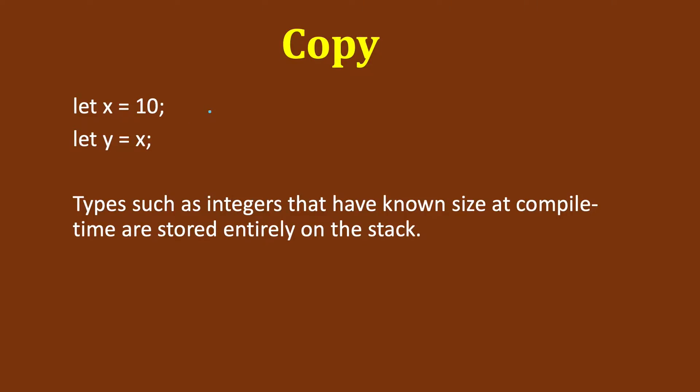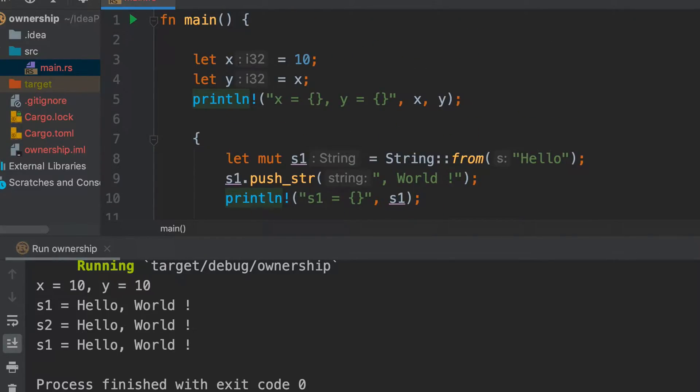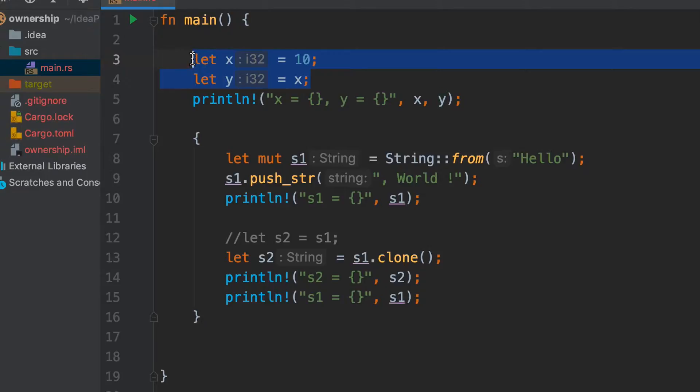Now let's see another concept called copy. We have also seen in the code example here that if we have these integers and we assign x to y, then we were able to use x as well as y.